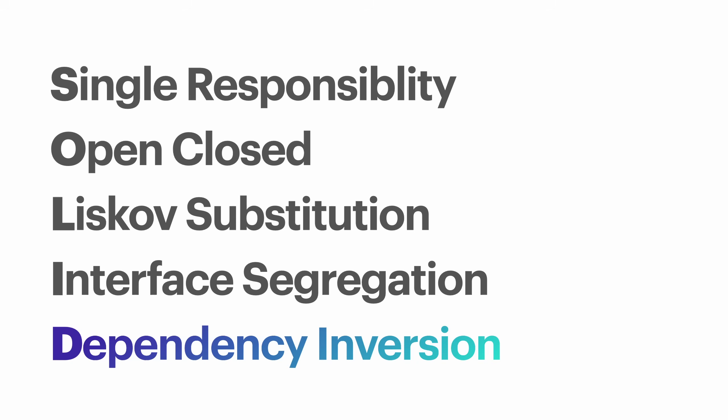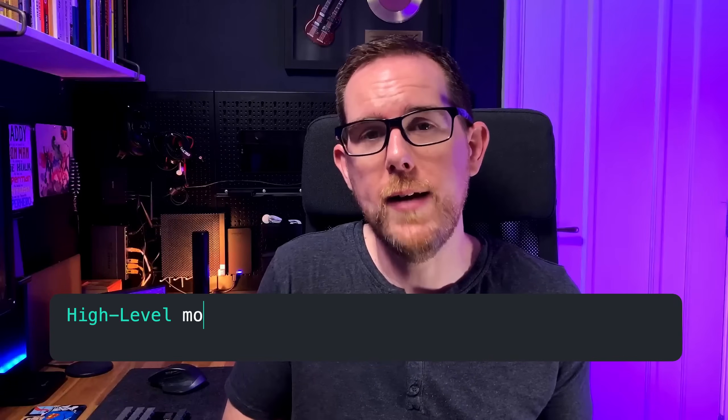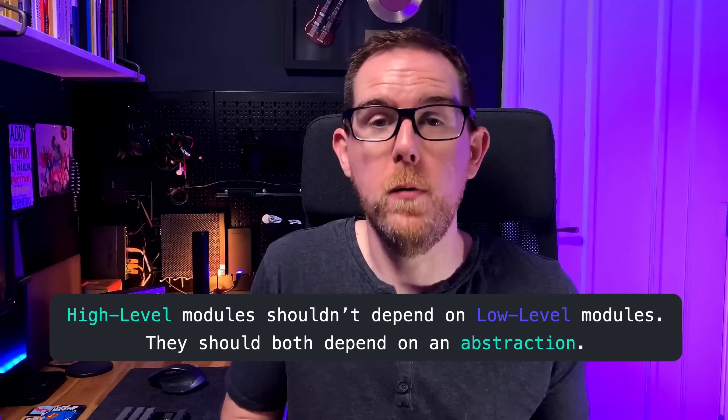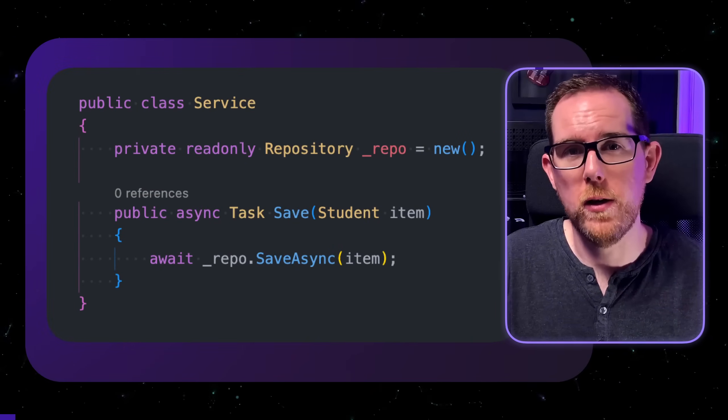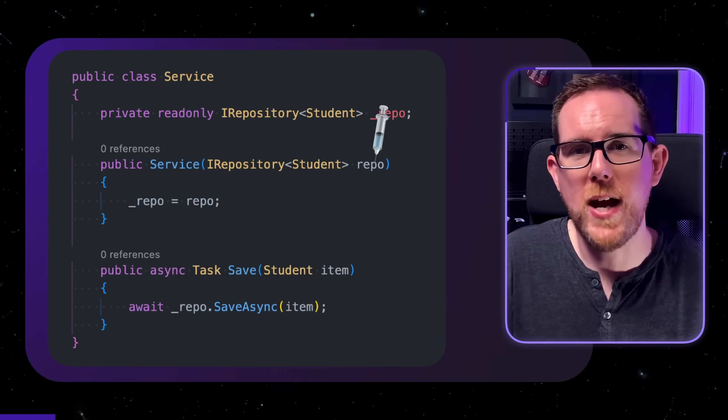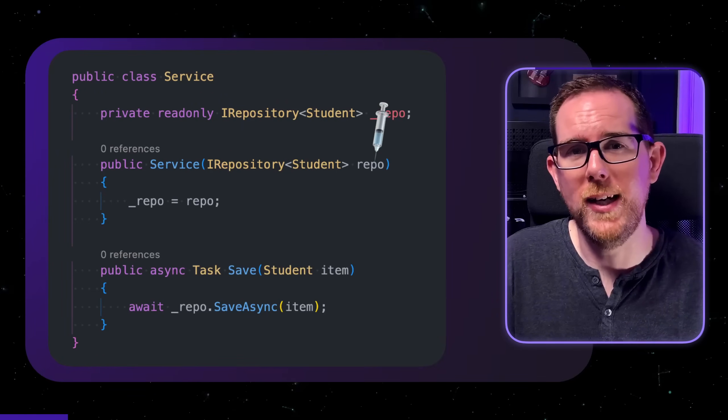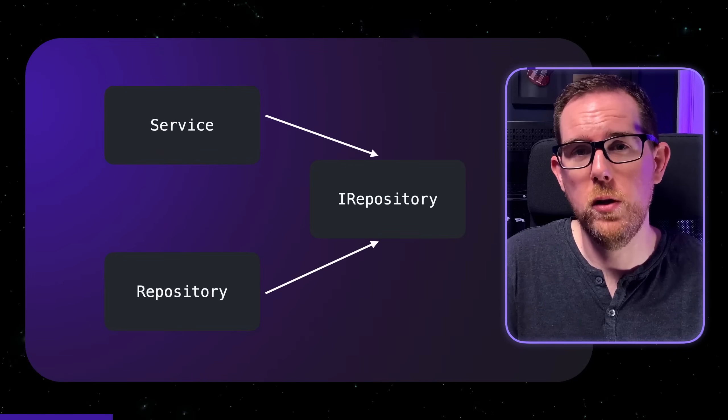The last principle of SOLID is dependency inversion, which states that high level modules shouldn't depend on low level modules — they should both depend on an abstraction. For example if you had a service class and you wanted to save something to a database, you could create an instance of the repository class directly inside your service. But now your service is dependent on a lower level component. To overcome this we create an interface for our repository and then inject an instance of the repository into that class via the constructor. Now both the high level and low level modules depend on an abstraction, which in this case is the interface. The service doesn't need to know which repository it's using or how it works — it just cares that it meets the specifications of the repository interface.